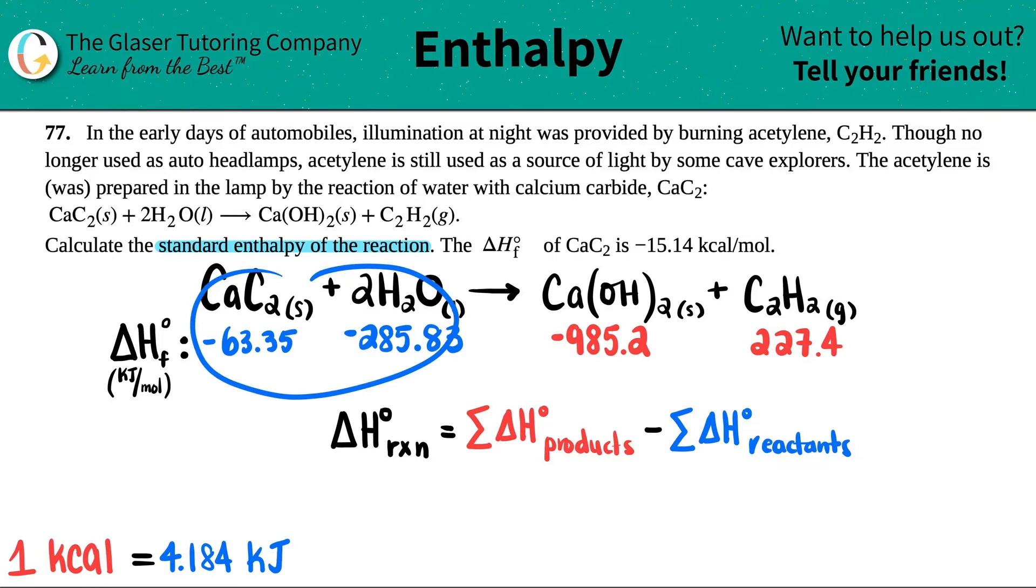So I just need to get one single number for the left-hand side and one single number for the product side. So what we're going to do is we're just going to multiply the numbers that we found out by how many we have in our balanced equation.